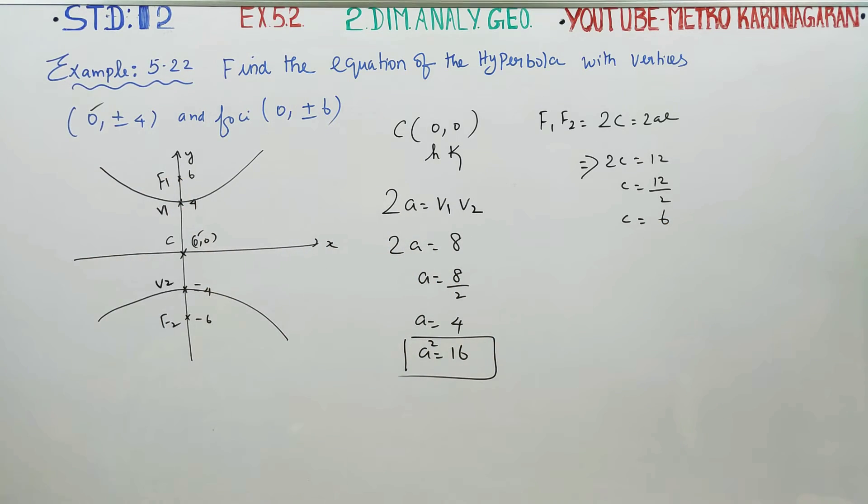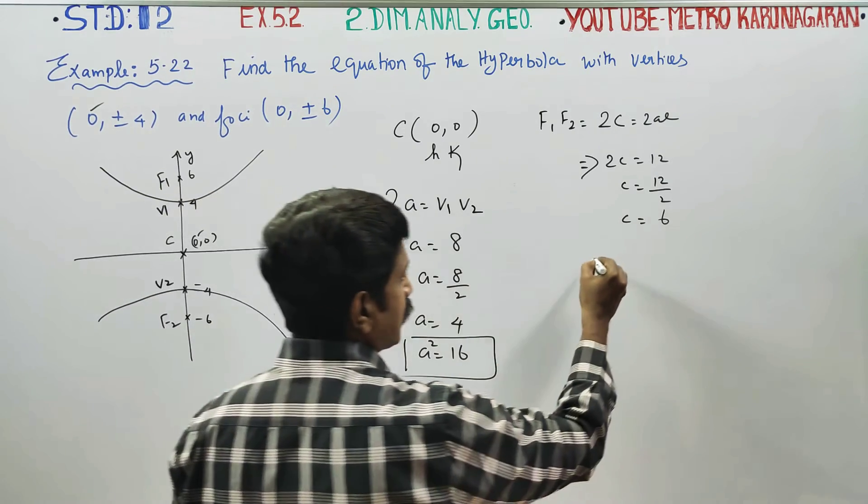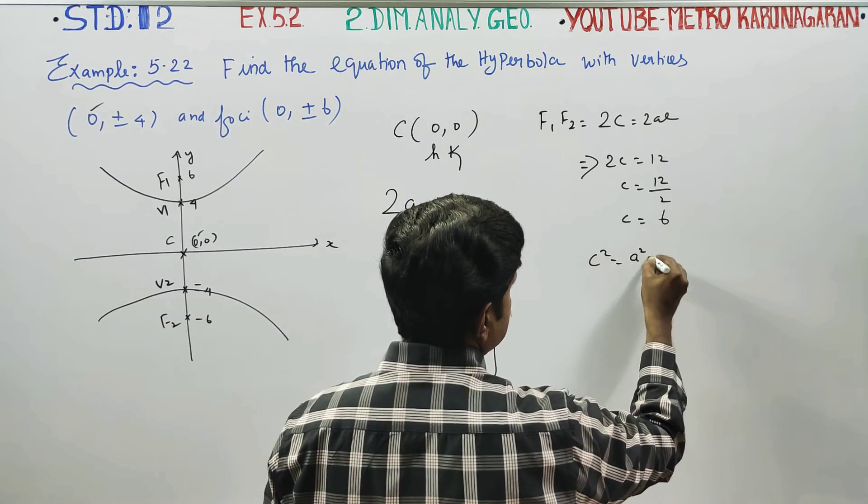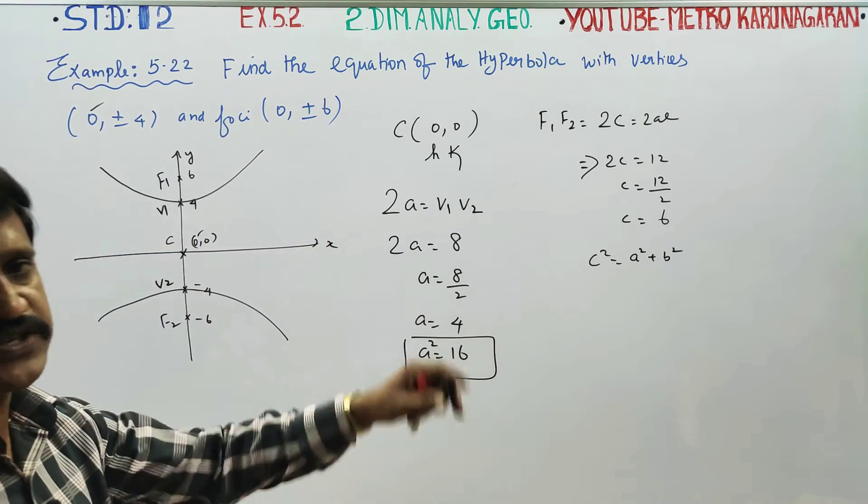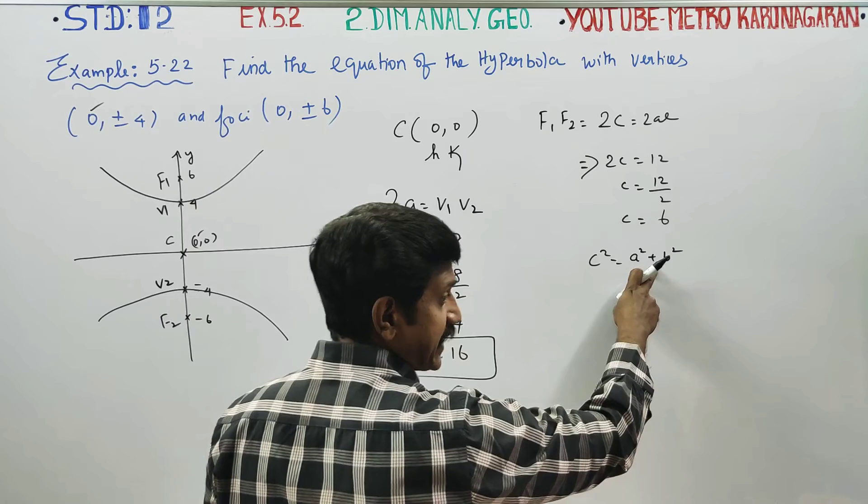Coming to this hyperbola. Hyperbola, C square is equal to A square plus B square. Ellipse is minus.